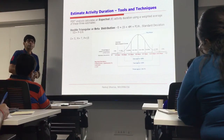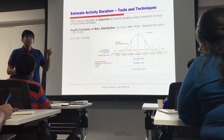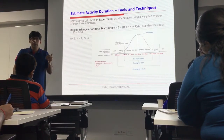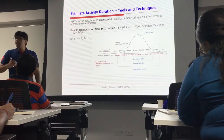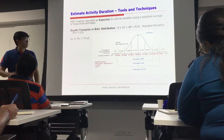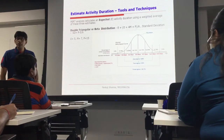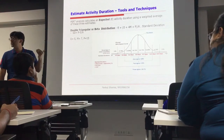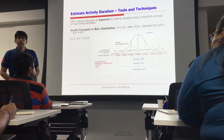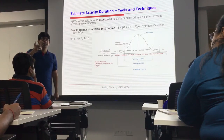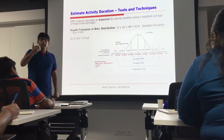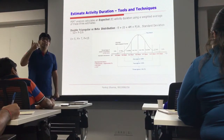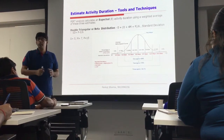For a project, let's say the best case scenario — Optimistic — was 5 days, the most likely scenario was 7 days, and the pessimistic — worst case scenario — was 15 days. Now using the formula: Expected Time equals Optimistic plus 4 times Most Likely, plus Pessimistic, divided by 6. Please use the formula and find out the expected time.